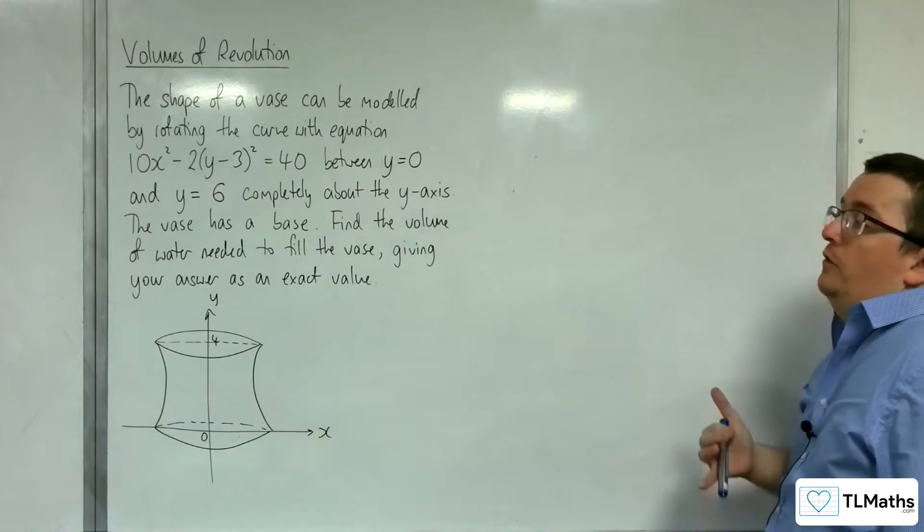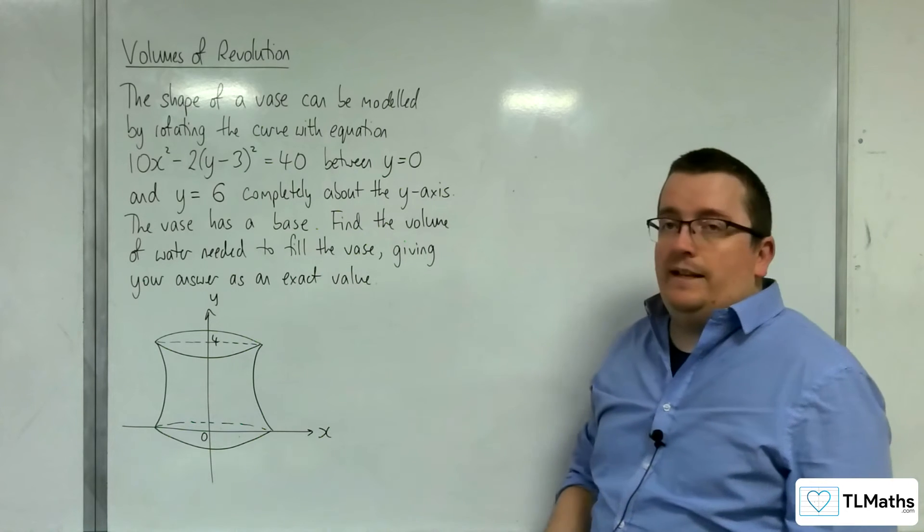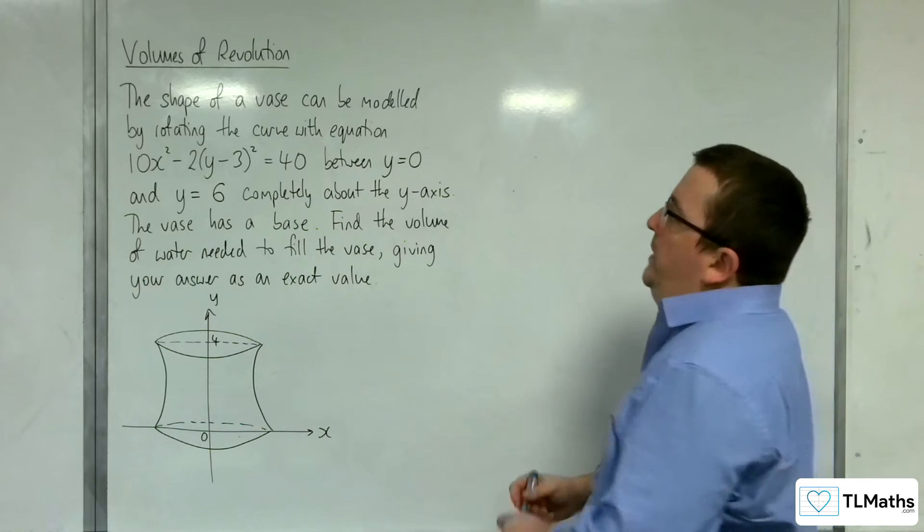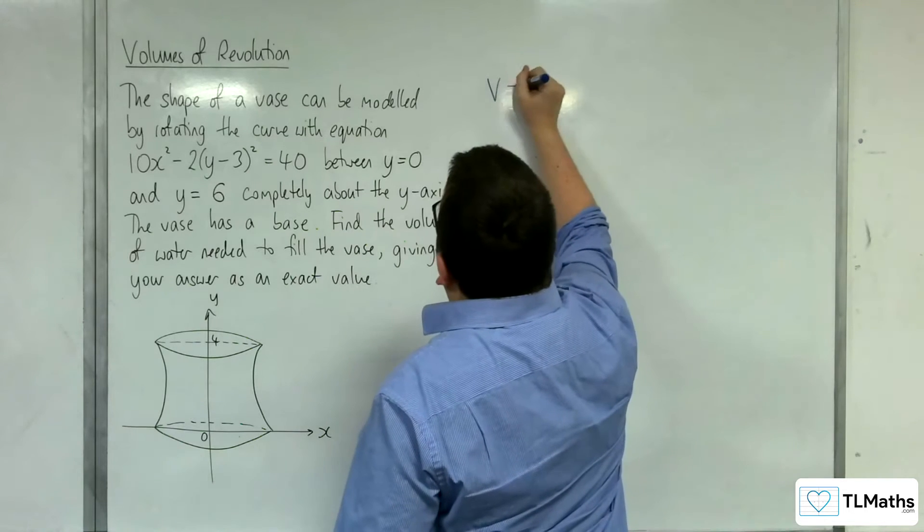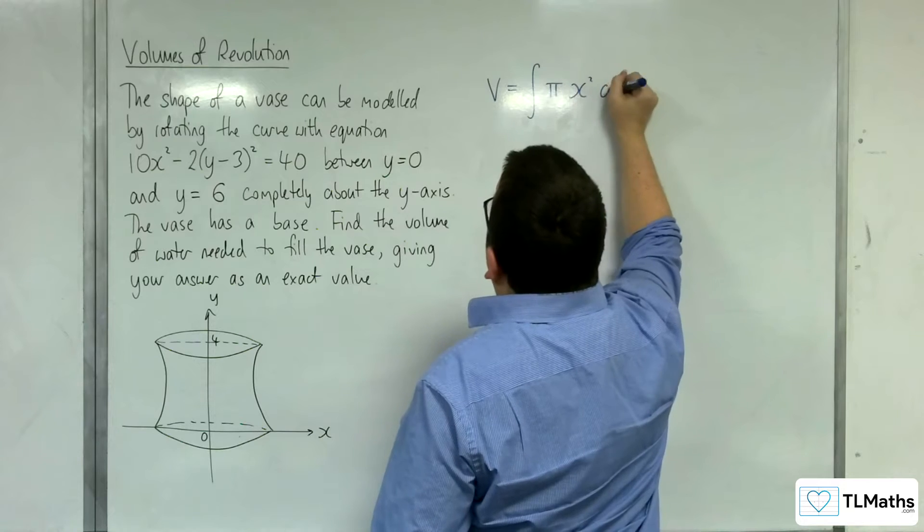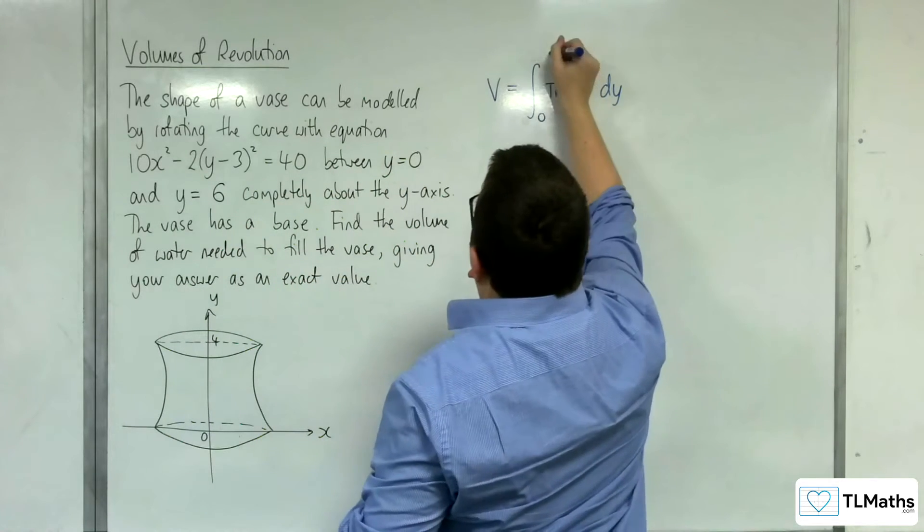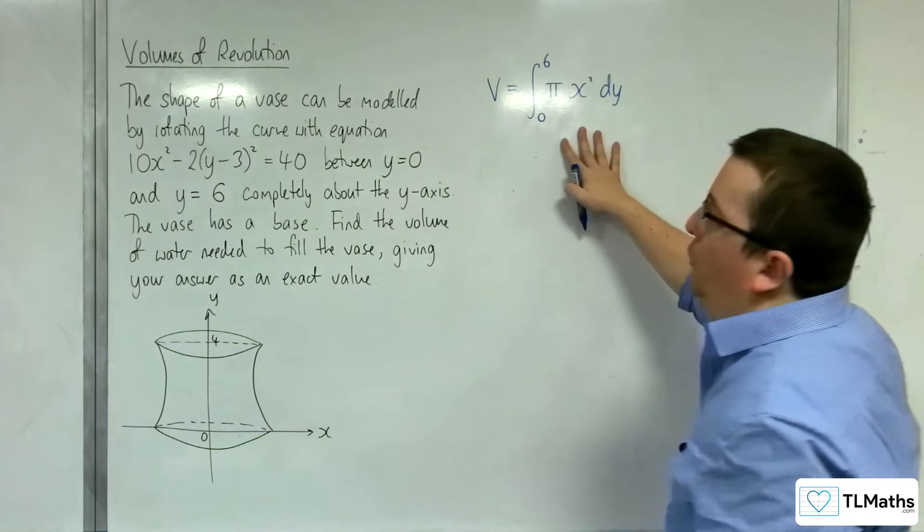The vase has a base. Find the volume of water needed to fill the vase, giving your answer as an exact value. So we know that the volume will be the integral of π x² dy, going between y=0 and y=6. So this is the form we need to get.